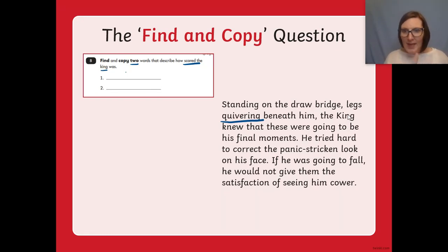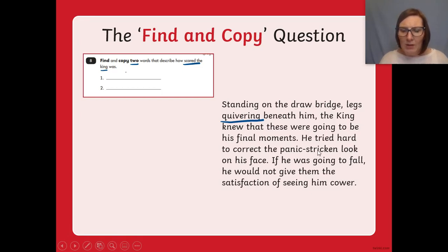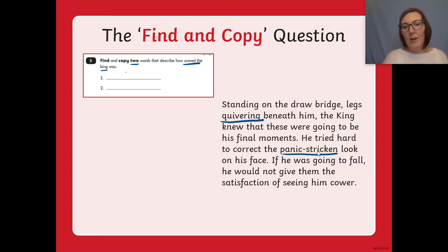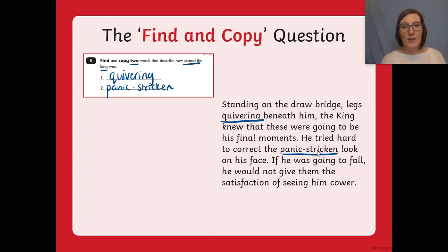I've got one word, so I need to carry on scanning, looking for he or king again. I found he. Reading that section: 'He tried hard to correct the panic-stricken look.' Panic-stricken - if you're panic-stricken, that means you look scared. I'm underlining panic-stricken as my other word. So I have my two words: quivering and panic-stricken. I'm not going to copy out the whole sentence because it's only asking me for two words.